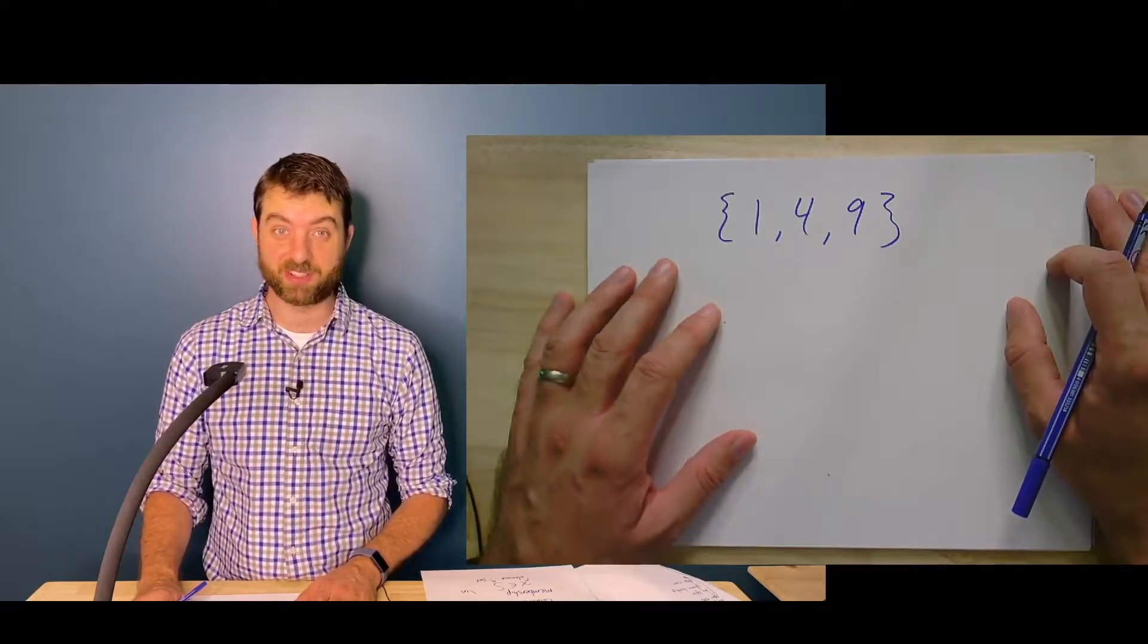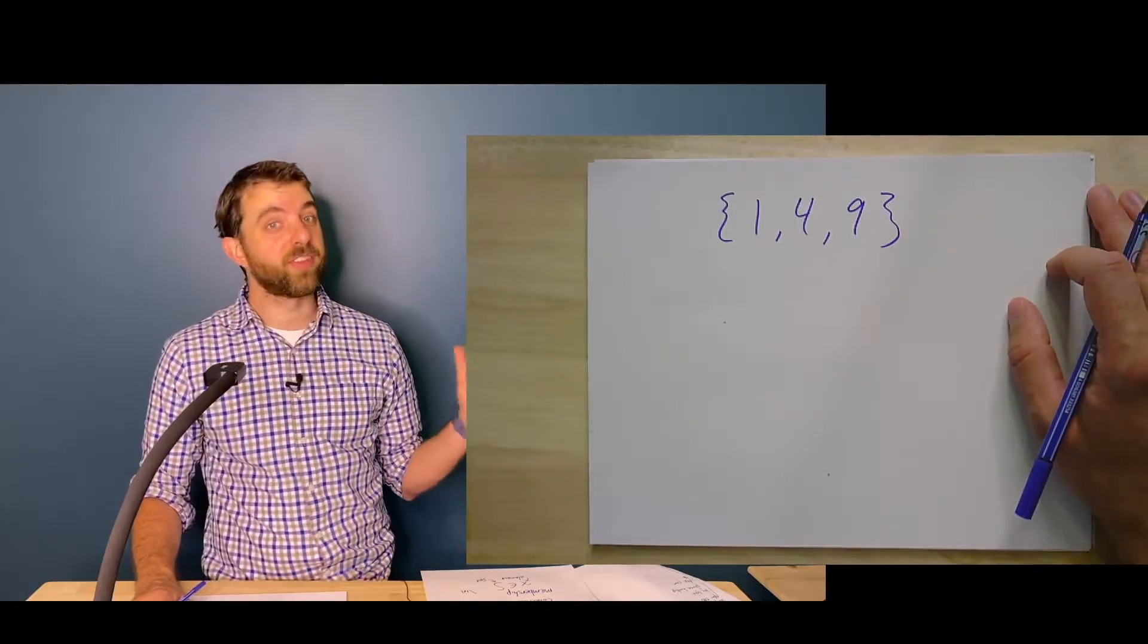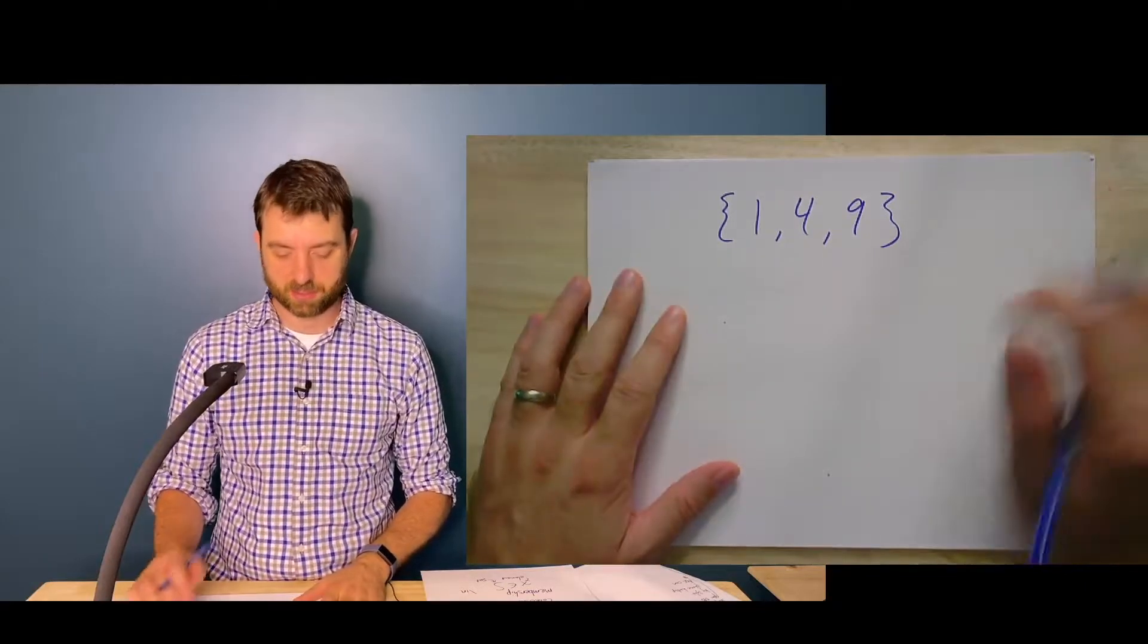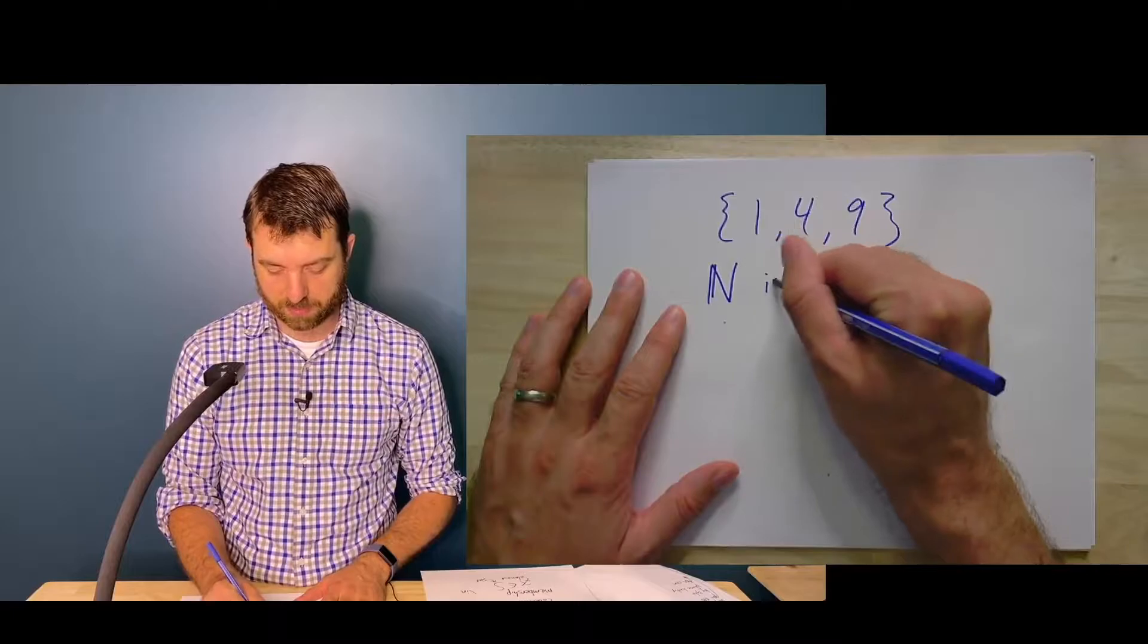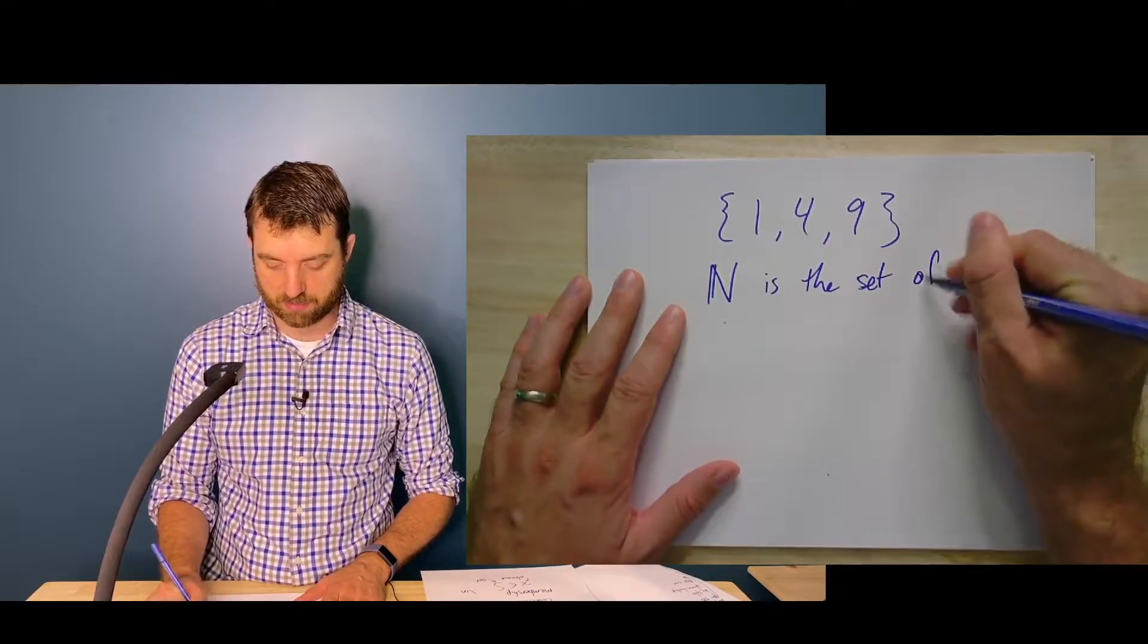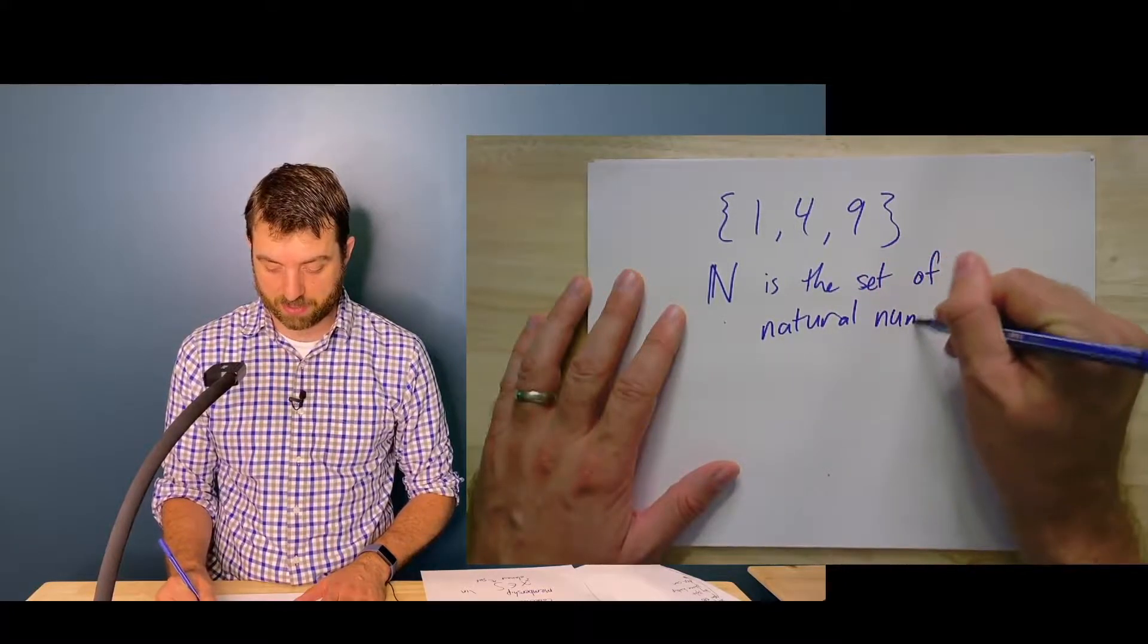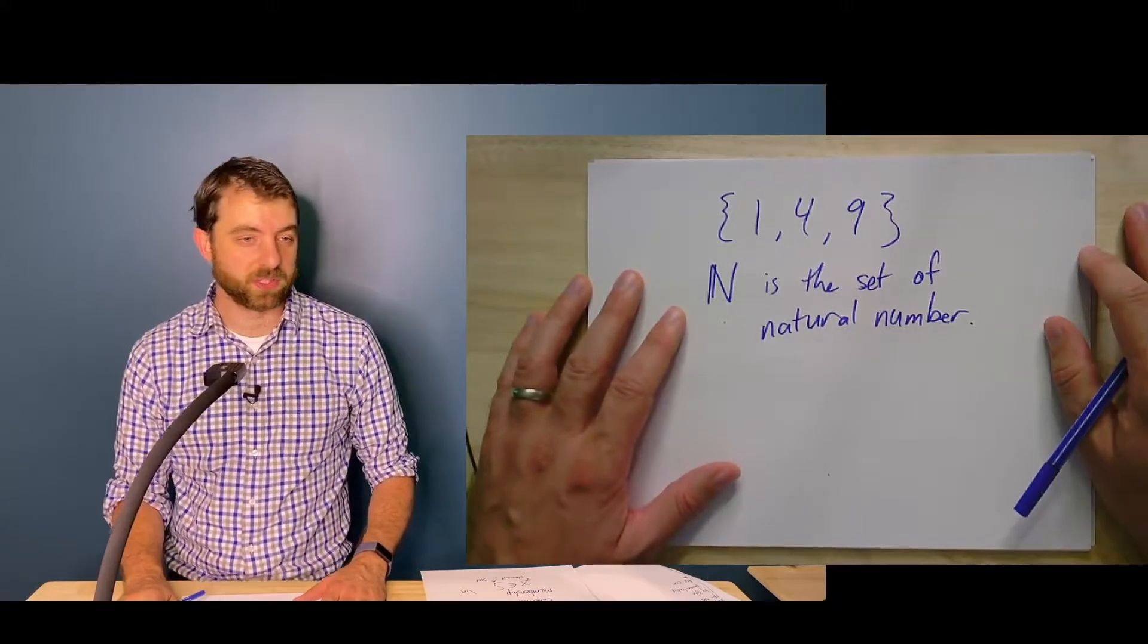You can also describe a set just in words. If the description in words is clear enough that it tells me exactly what elements are in the set and which ones are not, then that's good enough. So you'll see things like the natural numbers is the set of natural numbers. You know what a natural number is. You know what the elements of the set are. This is pretty normal as well.